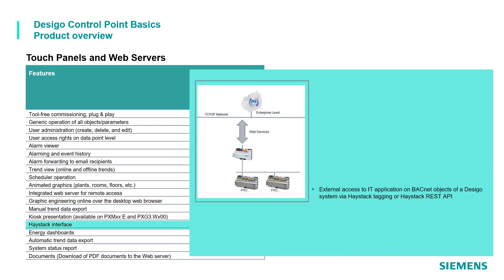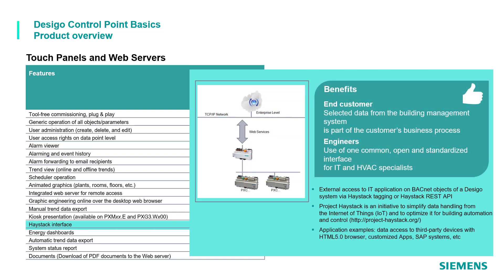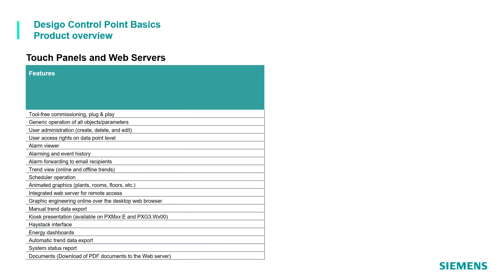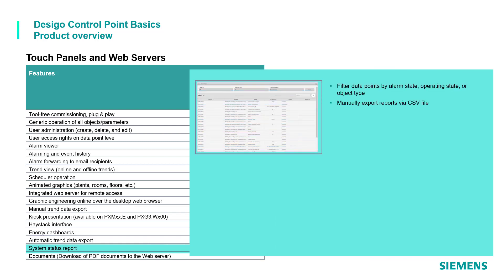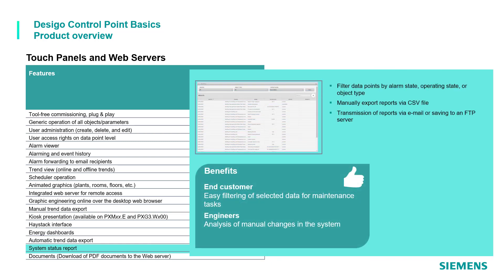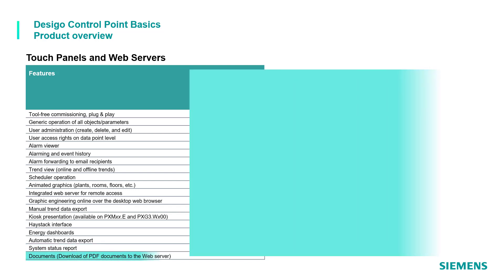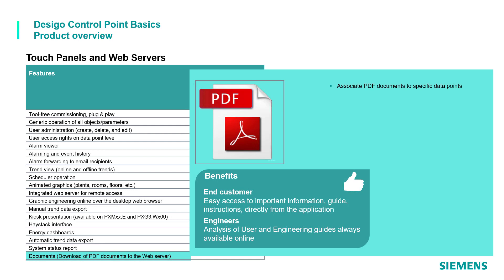High-stack interfaces and a high level of standardization simplify engineering for IT and HVAC specialists. Energy dashboards provide standard templates to display and compare energy consumption, with a comprehensive selection of graphically configurable controls for easy monitoring and optimization. System status reports filter data points by alarm and operating states or object type, and results can be exported to a CSV file or transmitted via email. Documents can also be associated to data points, making them available to end customers or engineers.